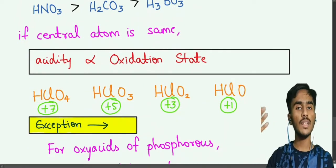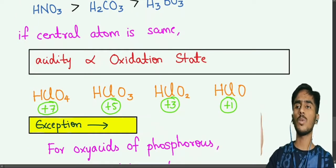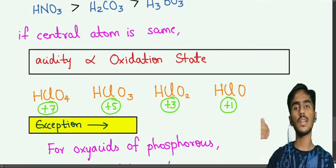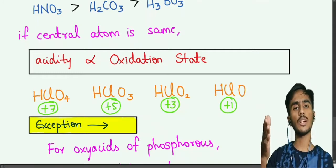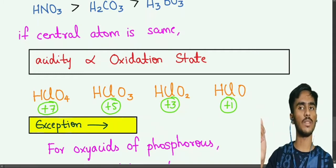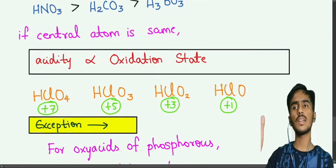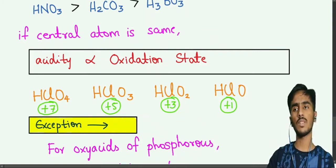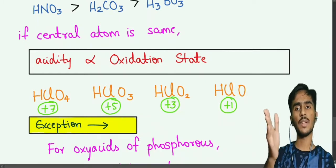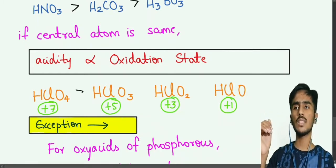Now, when the central atom is the same, consider the example: HClO4, HClO3, HClO2, HClO. Here the central atom is chlorine. Acidity is directly proportional to oxidation state. The oxidation states are +7, +5, +3, and +1 respectively. Therefore HClO4 has the highest oxidation state and the highest acidity.